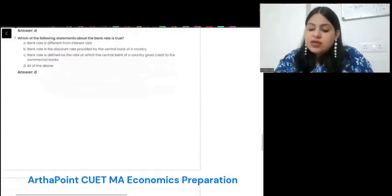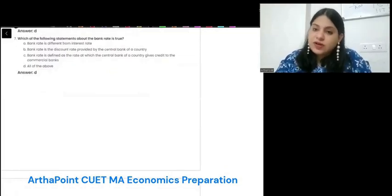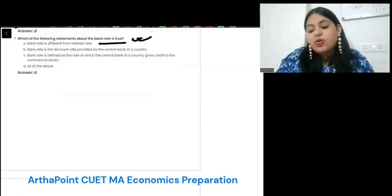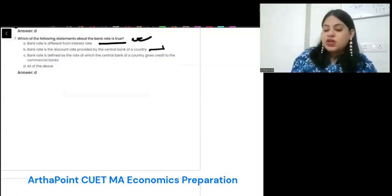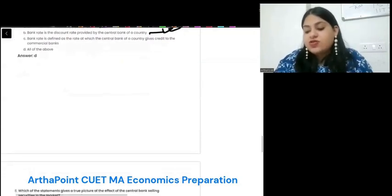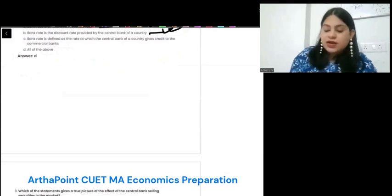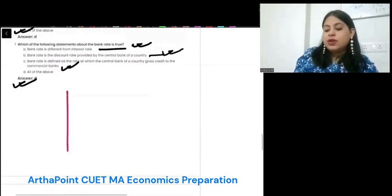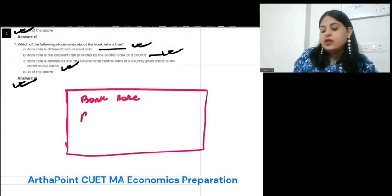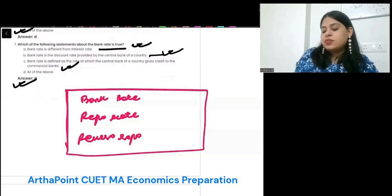Which of the following statement is true about bank rate? Bank rate is different from interest rate. Bank rate is the discount rate provided by the central bank of the country — correct. Bank rate is defined as the rate at which the central bank gives credit to commercial banks — correct. So all options are correct. You should know the difference between bank rate, repo rate, and reverse repo rate.